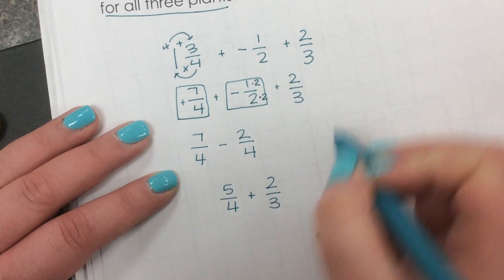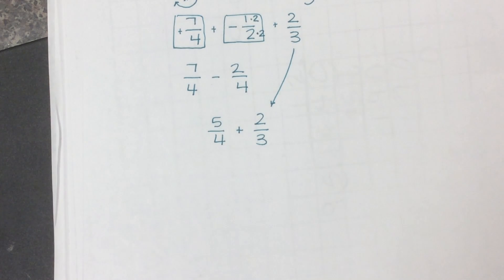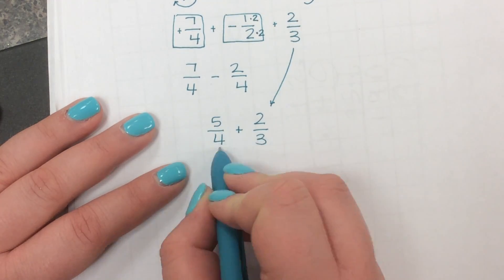And then I still have my plus two thirds. Do not forget to bring that down. Now, in order to add these, I still need a common denominator. So I've got to think, what is my least common multiple of four and three?